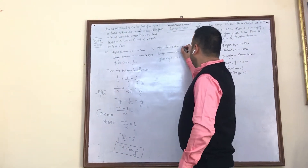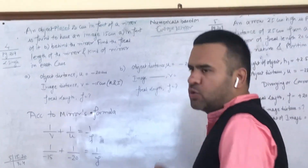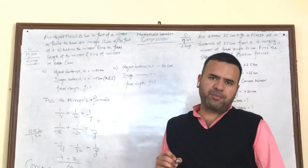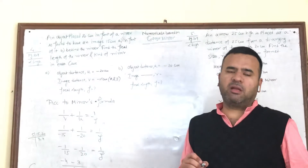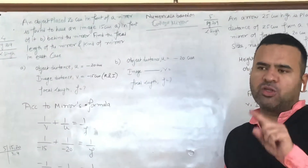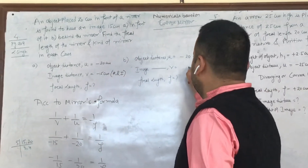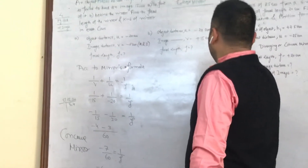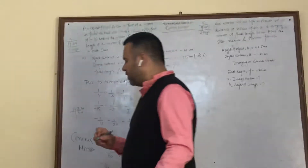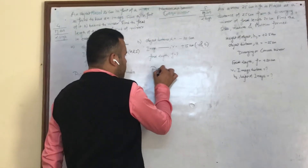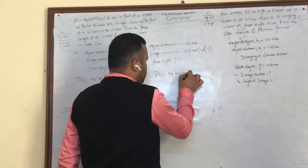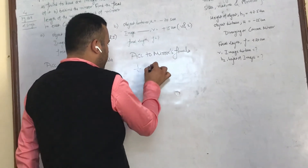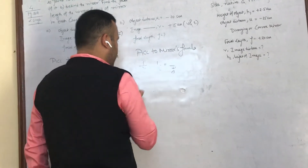For part B: an object is placed in front, so u = -20. The image is behind the mirror. The image will be virtual and erect because convex mirror and concave lens both make virtual, erect, and diminished images. So v = +15 (positive instead of negative), because the image type is virtual and erect. Please watch the sign convention video if you have any doubt about sign convention.